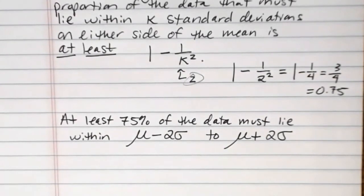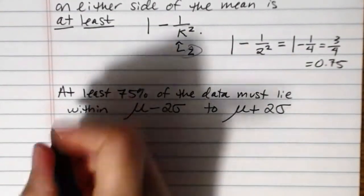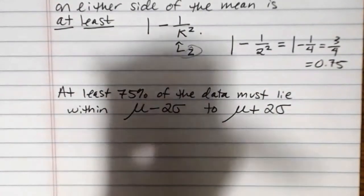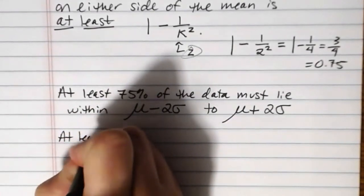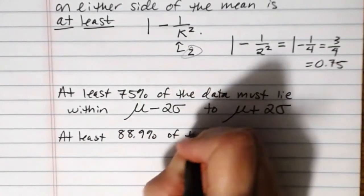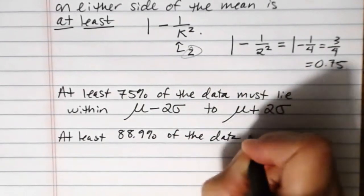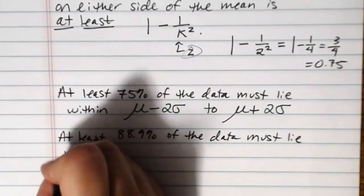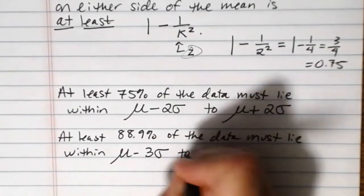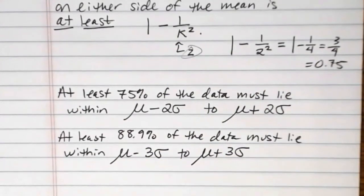It helps us quantify how much of the data we expect to be in that interval. Similarly, if we plugged in the number 3 here for k instead of 2, what we would find is that at least 88.9% of the data must lie within mu minus 3 sigma to mu plus 3 sigma. 3 standard deviations on either side of the mean. We should have captured at least 88.9% of the data.